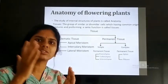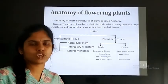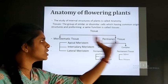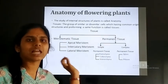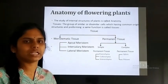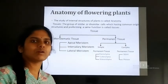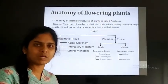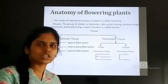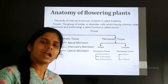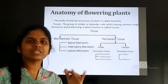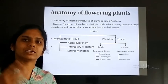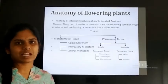Tissue system classification: overall the tissue system is classified into three types — epidermal tissue system, vascular tissue system, and ground tissue system. This will be studied in the next step.